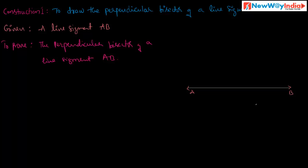Now what are the steps of construction? Step one: given the line segment AB, draw arcs with A as a center and radius more than half of AB. Using compasses, take the radius more than half of AB and with A as center draw an arc above the line segment AB and below the line segment AB.